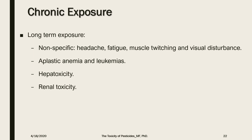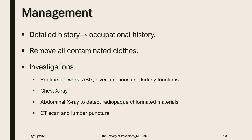Hepatotoxicity and renal toxicity are also recorded with organochlorine exposure. When it comes to management, the history of exposure is the most important piece of information. Decontamination and removal of all clothing is essential. Laboratory studies include blood glucose, electrolytes, renal and liver function tests, arterial blood gases, and urine analysis. ECG is important to detect cardiac abnormalities. Plasma and RBC cholinesterase testing may be considered if organophosphorus co-exposure is suspected or if the offending toxicant is undetermined and the patient presents with signs of cholinergic toxidrome.